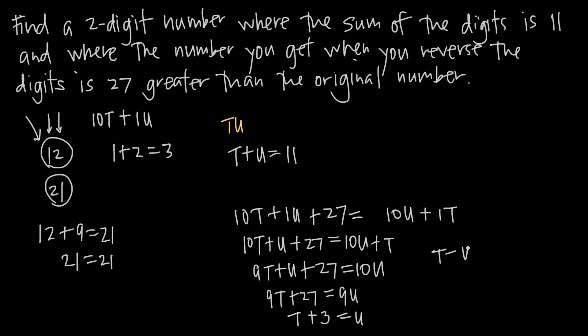If we subtract u from both sides, we have t minus u plus 3 equals 0. And now if we subtract 3 from both sides, we get t minus u is equal to negative 3.